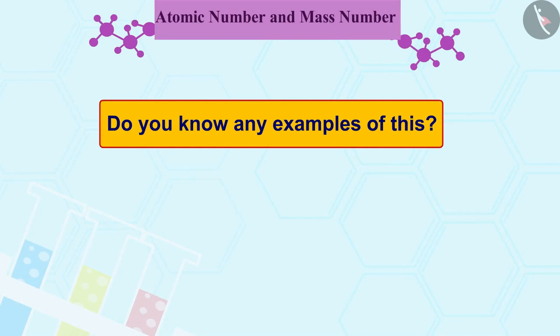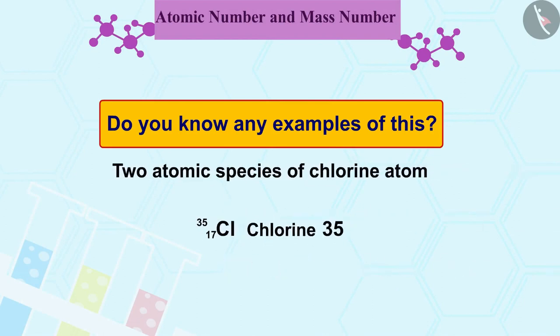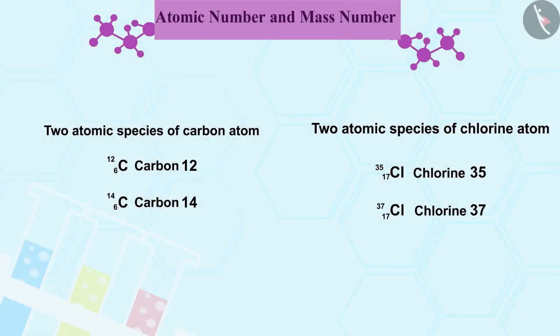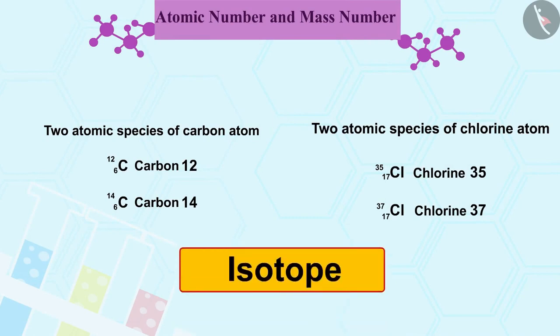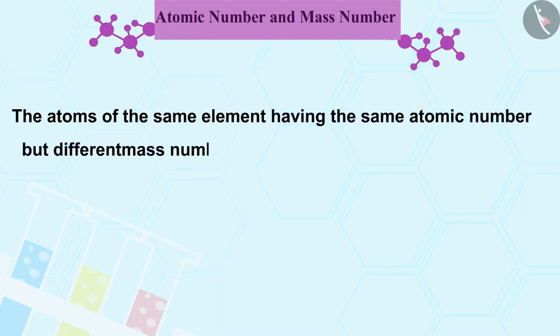Do you know any examples of this? Carbon-12 and carbon-14 and chlorine-35 and chlorine-37 are some other examples of this kind. These atomic species have a special name. We call them isotopes. The atoms of the same element having the same atomic number but different mass numbers are called isotopes of that element.